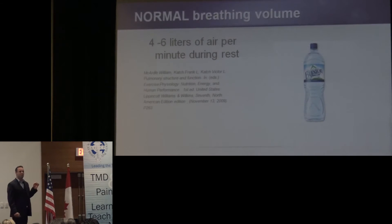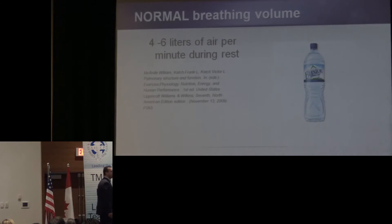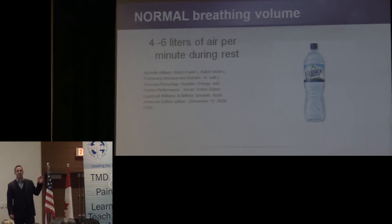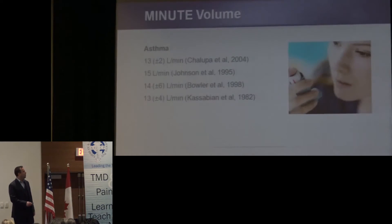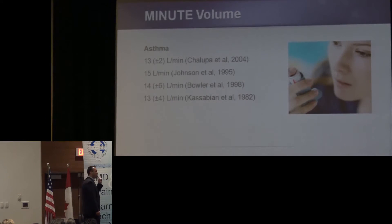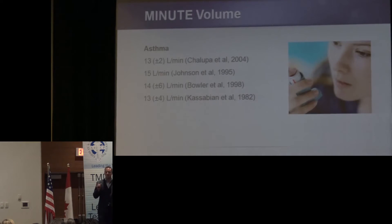Normal minute volume — looking at a 2009 textbook — is four to six liters of air per minute. Generally we have 10 to 12 breaths; each breath is half a liter, giving us our four to six liters. That is considered normal. When we look at asthma — and I'm bringing up asthma because I'm going to tie it in with obstructive sleep apnea — there is something going on with asthma that's also going on in OSA, and we have to find out why. What is the relationship?